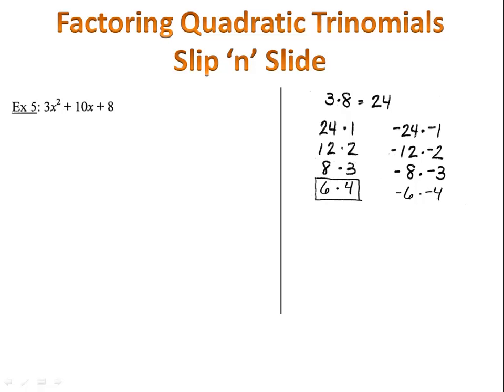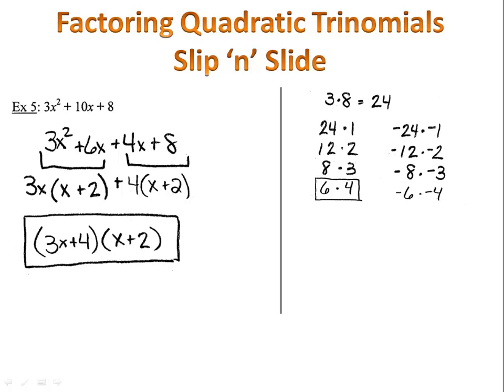Let's see how you did. 3 times 8 is 24, and so I listed out all the factors of 24. I wanted the pair that added up to positive 10, the number in front of x. 6 plus 4 is 10, and so I rewrote my expression 3x squared plus 6x plus 4x plus 8.